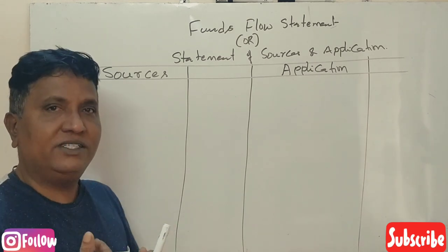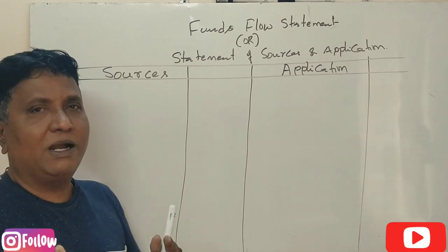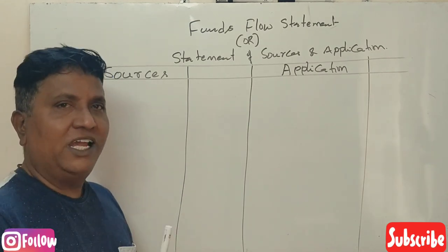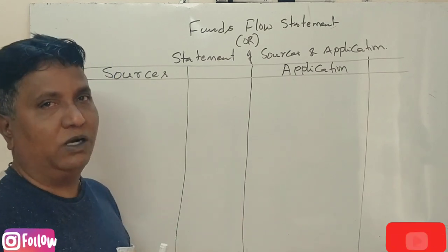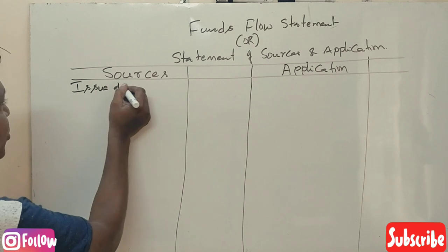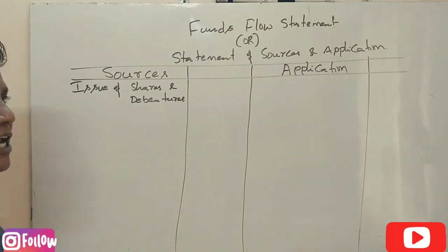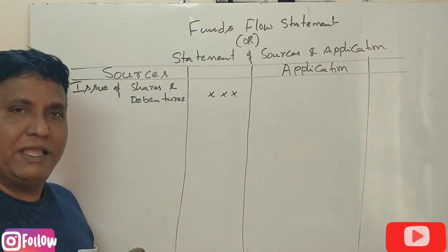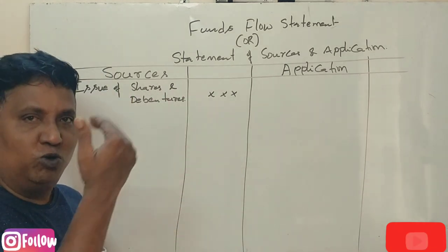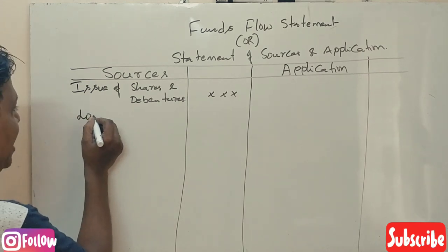What are the different sources of funds for a business or company? The first source of funds is the issue of shares and debentures. The public purchases the company's shares and debentures, and this becomes one of the sources of funds for the company.